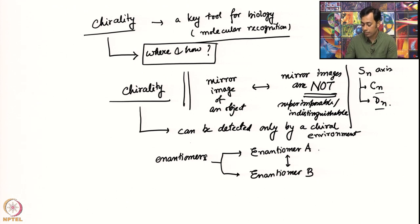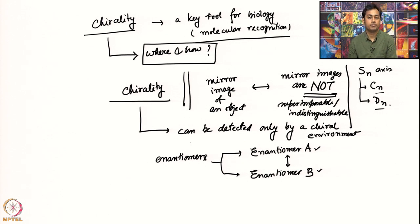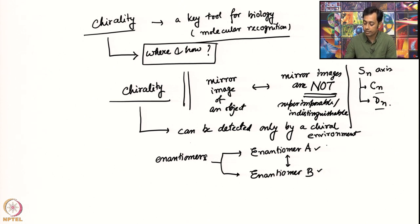All the physical properties of enantiomer A and B will be very similar, and all the chemical properties will also be very closely similar. The only thing that will differ is when you put them in a chiral environment.